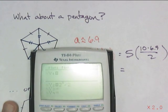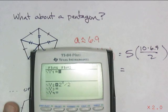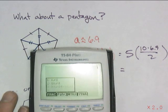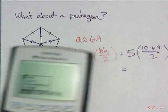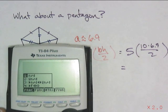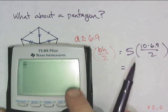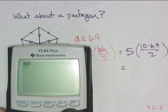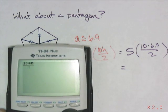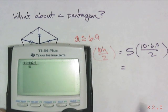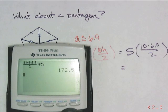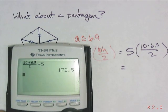And I tell you what, I don't know why you refuse to use the fraction button. The fraction button is fantastic. I'm going to want 10 times 6.9. Of course, you could have done that by yourself. Divide by 2. Multiply that times 5. And it gives you an answer. 172.5.